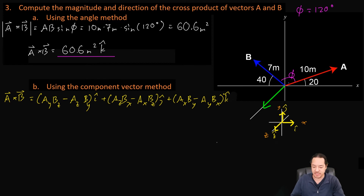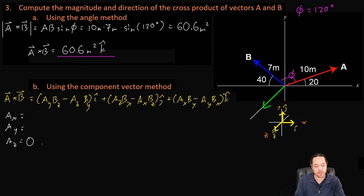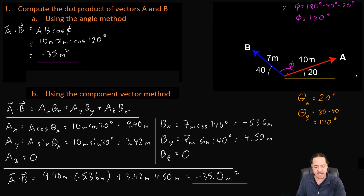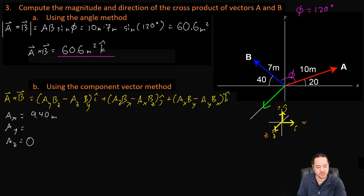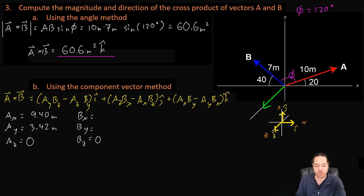Now we actually write down what all these components are. We need A sub X, A sub Y, and A sub Z. A sub Z is zero since it's in the XY plane. I've already computed these components, so I'll copy them: A sub X is 9.40 meters, A sub Y is 3.42 meters. For B: B sub X is negative 5.36 meters, B sub Y is 4.50 meters, and B sub Z is zero.